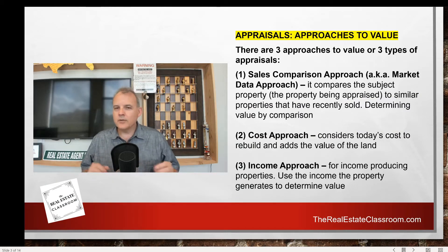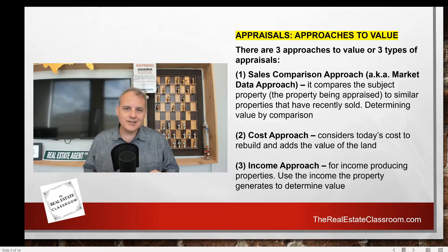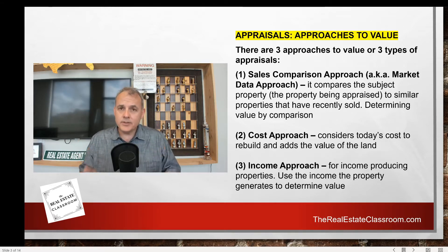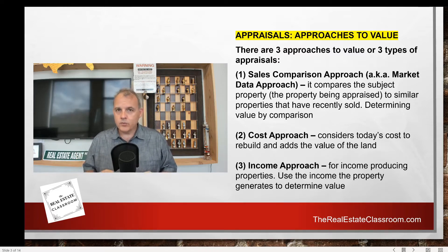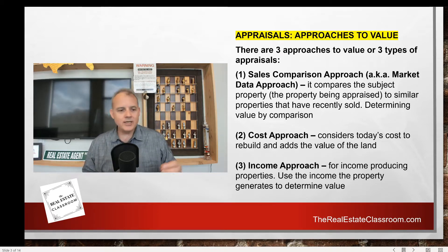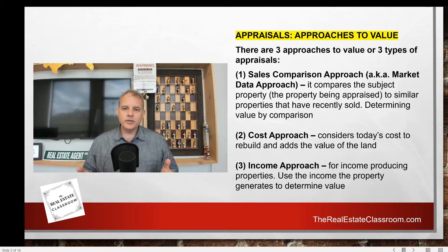Before we get into the gross rent multiplier, there are three approaches to value you have to know for your real estate license exam. There's the sales comparison approach, sometimes called the market data approach, where we determine value by comparing properties that have recently sold similar to our subject property. Approach number two is the cost approach, for valuing unique properties such as municipal buildings and churches, where we consider the property's cost to rebuild. And then there's the income approach — that's what we're doing today.